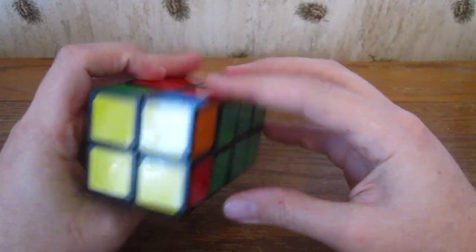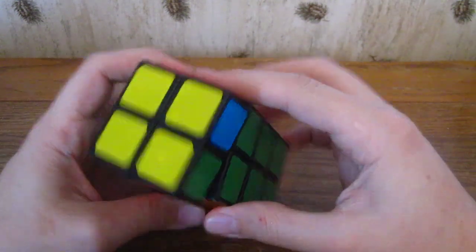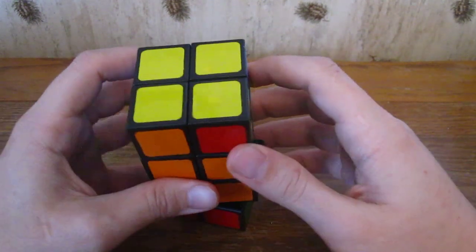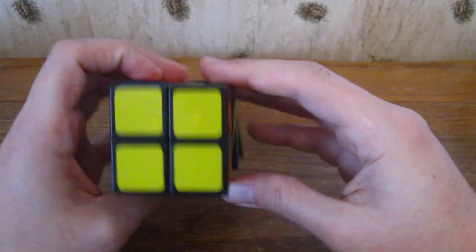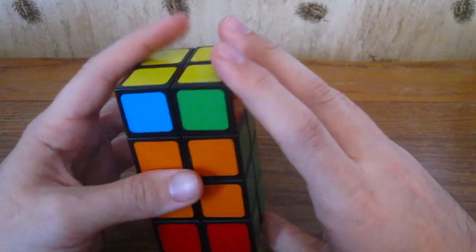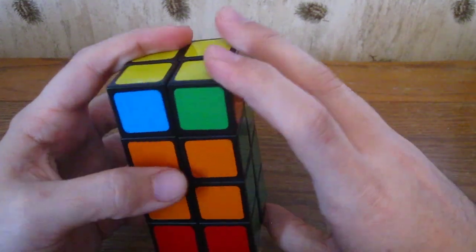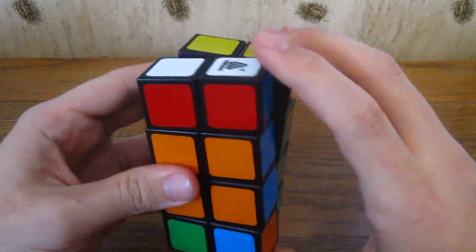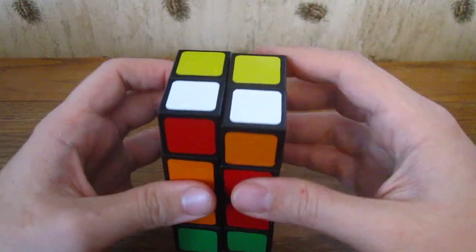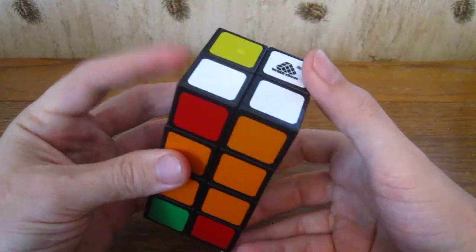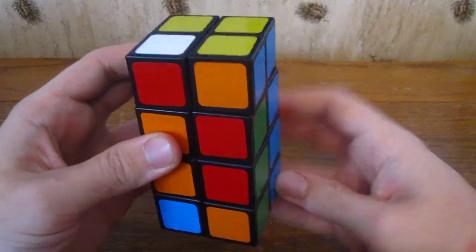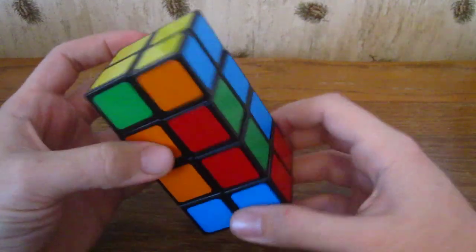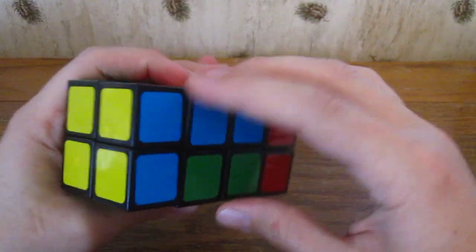The way to swap them, if I remember correctly, would be 2f, then 2r u 2r u prime 2r d 2r u prime 2r. The white face is all good and this side now has a bar right here.